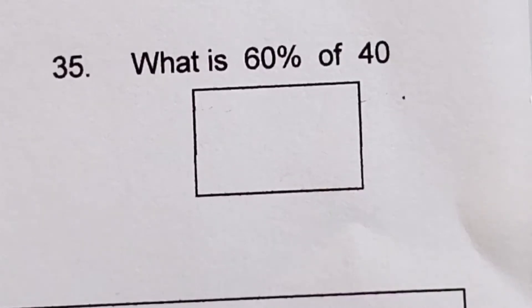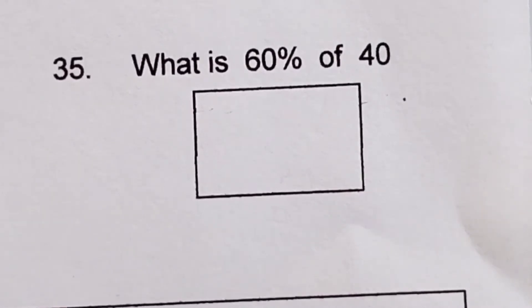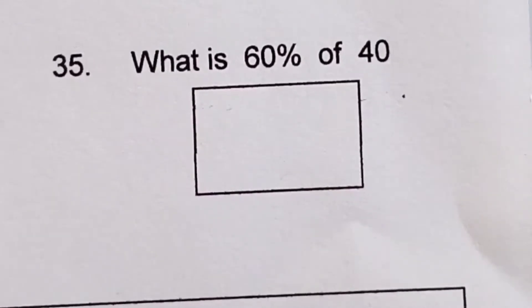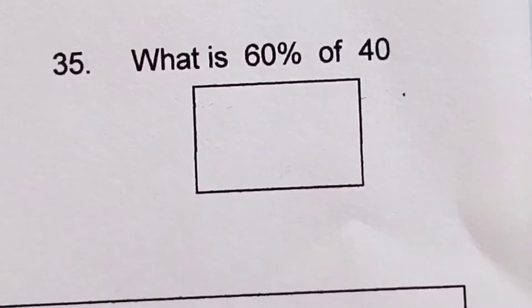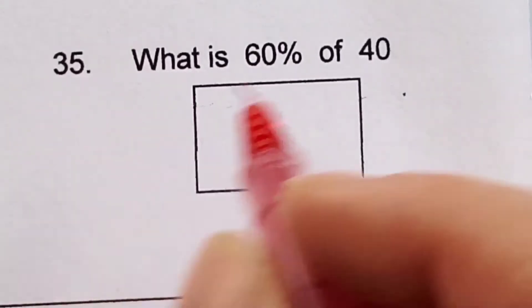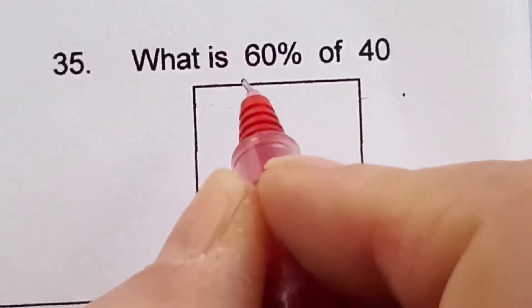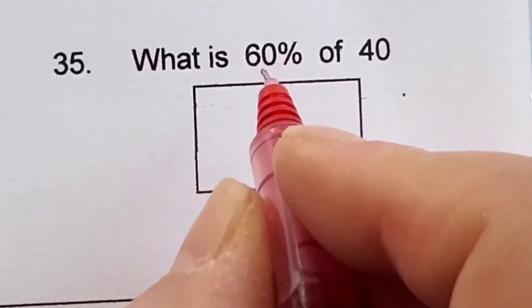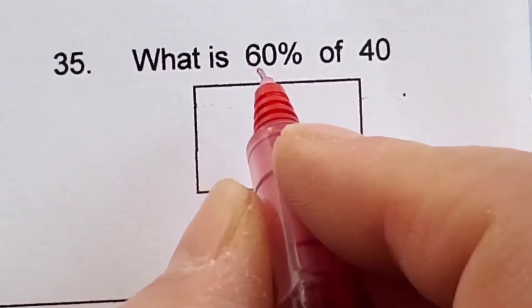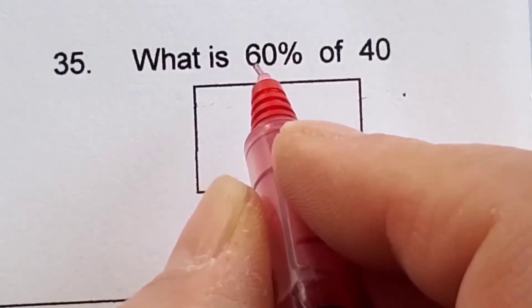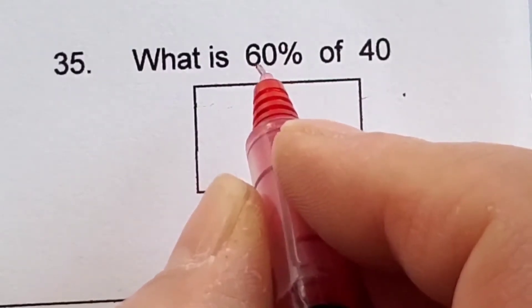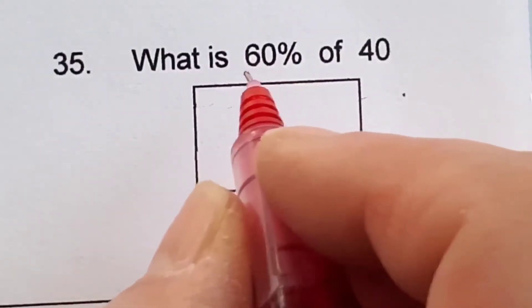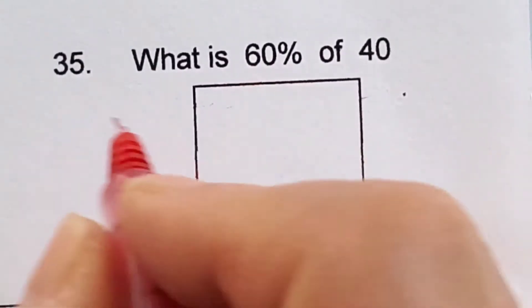Number 35: what is 60% of 40? So 60% can be written as 0.6 or 60 over 100. You can decide how you'll figure that out.